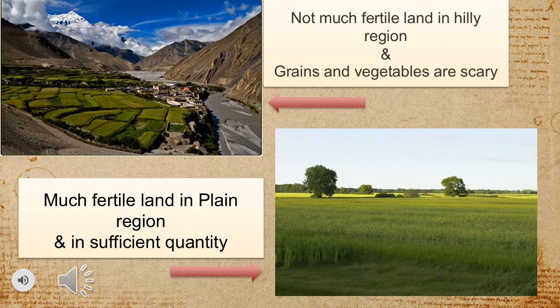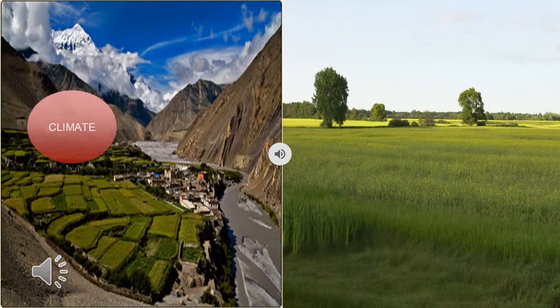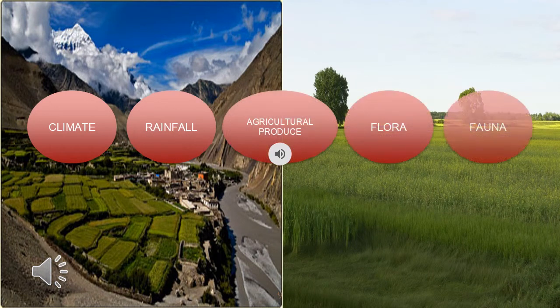For example, the life of the people in hilly regions is more strenuous than that of the people on the plains. Not much fertile land is available in the hilly regions, while in the plains it is available on a large scale. That is why grains and vegetables are scarce in hilly areas. The climate, rainfall, agricultural produce, flora and fauna of the region where we live are the sources of our livelihood.